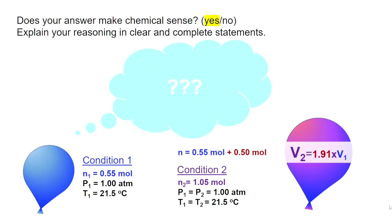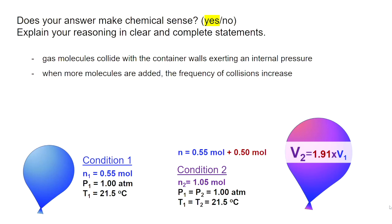Can you explain this reasoning in clear and complete statements? Gas molecules collide with container walls exerting an internal pressure. When more molecules are added to a container, the frequency of collisions increase.